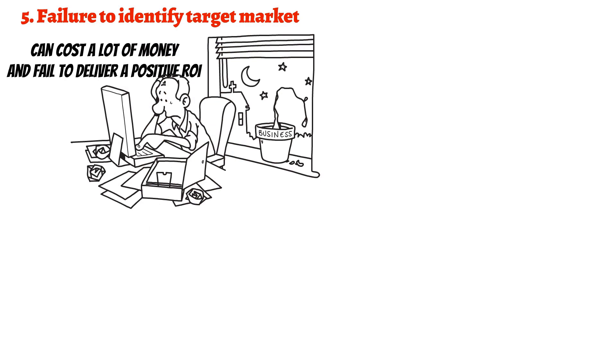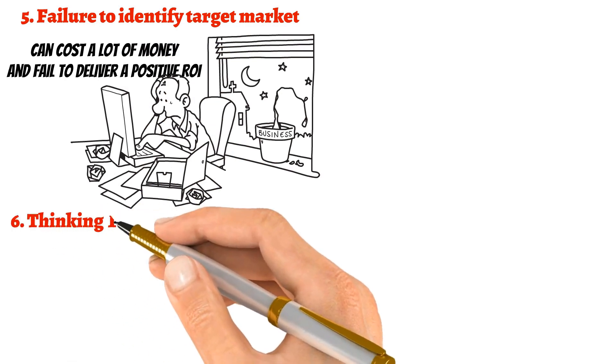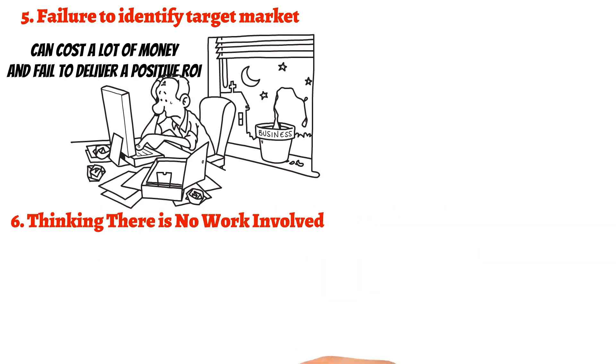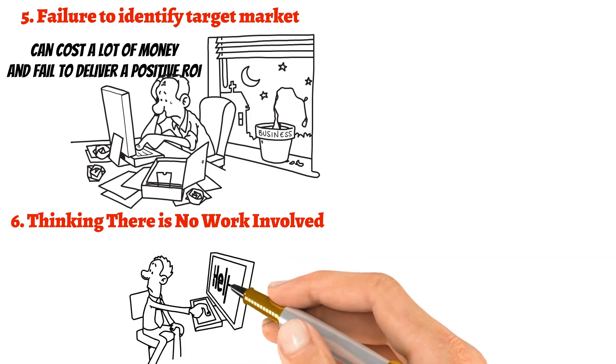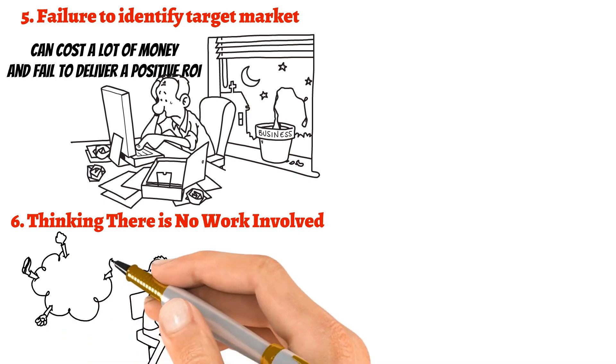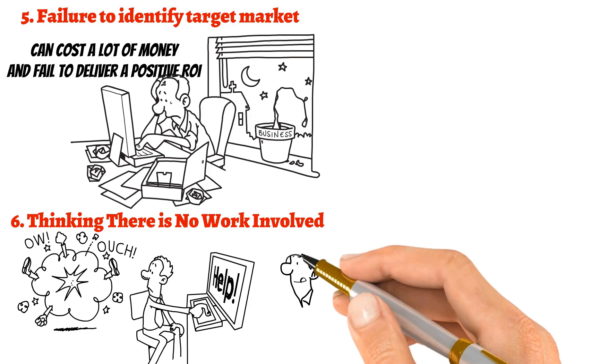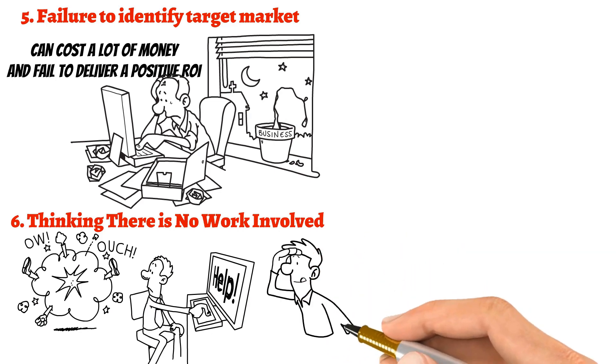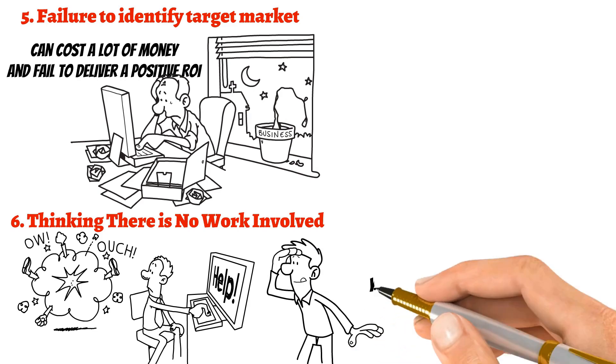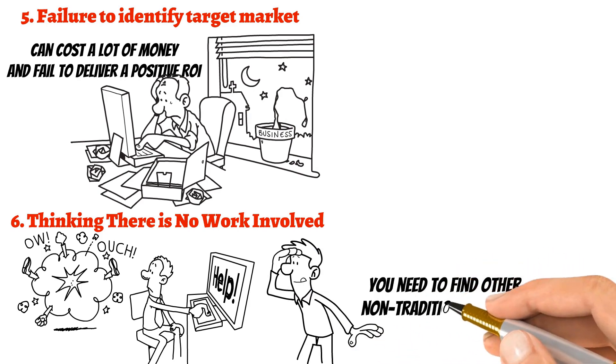Number six: thinking there is no work involved. For some reason, many new marketers think that operating an online business is far easier than running a traditional brick-and-mortar store. Just because you're online doesn't mean there is no work involved; in some cases, there might even be more. You don't have the benefit of placing yourself in a local mall for traffic, for instance. You need to find other non-traditional ways to generate sales.